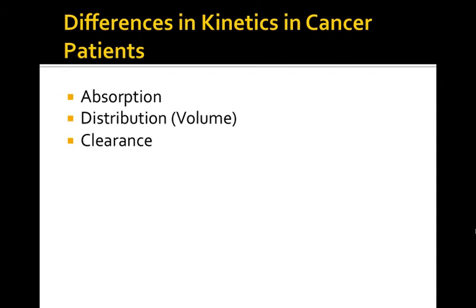Finally, what changes in clearance might we see? Many of the drugs that we use to treat cancer are either hepatically tough on the liver and can cause changes in hepatic function, or tough on the kidney, or both. So you can see changes in hepatic and renal clearance because of toxic effects of the drugs. There are a couple of ideas to think about with every drug you give a patient being treated for cancer.